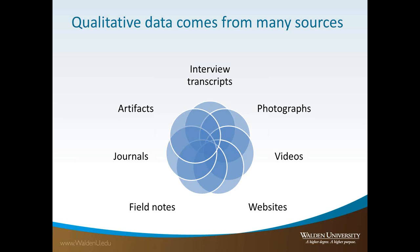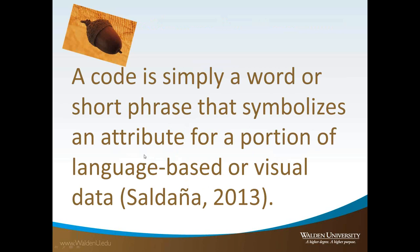In qualitative research, data comes from many sources: it could come from artifacts, journals, field notes, videos or photographs, other types of media, or interview transcripts. The challenge lies in providing a scaffolding to analyze the collected data — that's where coding comes into play. One of my favorite texts is Johnny Saldana's Coding Manual for Qualitative Researchers. He describes that a code is simply a word or short phrase that symbolizes an attribute for a portion of language-based or visual data, allowing you to stay focused and close to your data.